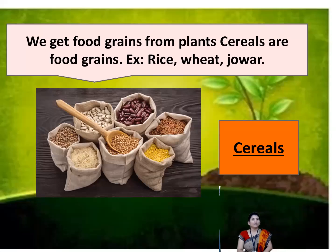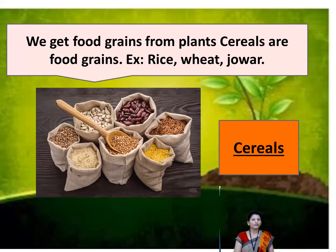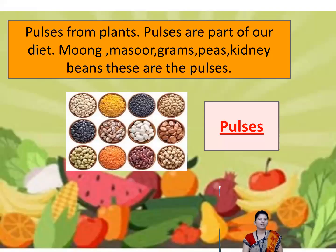We get food grains from plants. Cereals are the food grains. Look at this picture — these are cereals. Examples include rice, wheat, and jowar. All these are the cereals we get from plants.